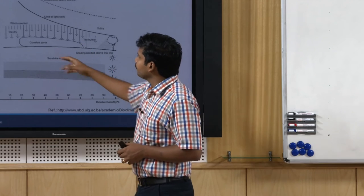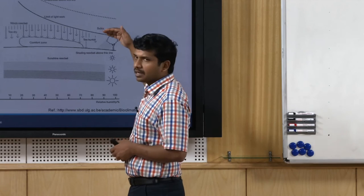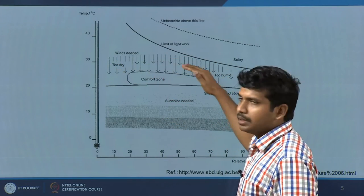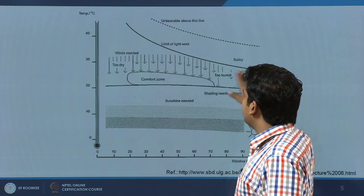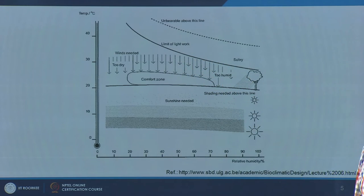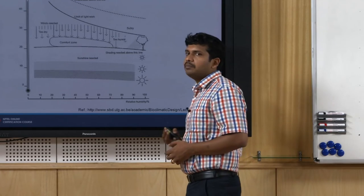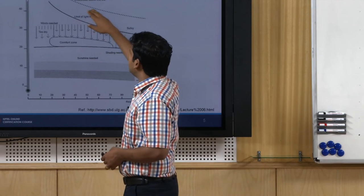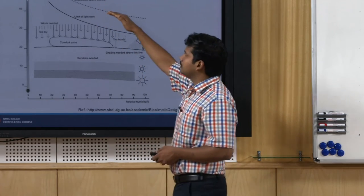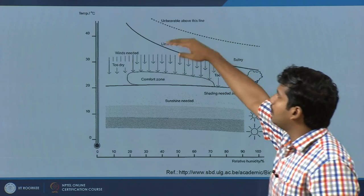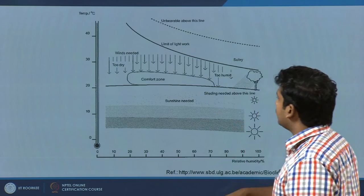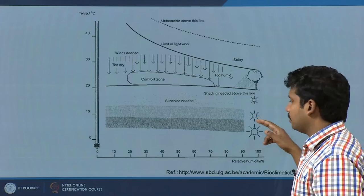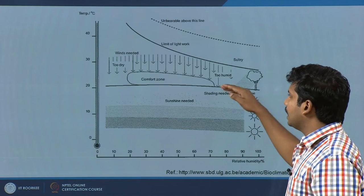For outdoor conditions: beyond the comfort zone you need shading; too dry on one side, too humid on the other; above the zone good air movement is needed. There is a dark line indicating the limit for light sedentary work — beyond this you risk heat stroke. A dotted line marks unbearable conditions where health impacts occur. On the colder side, below a certain line you need mild sun and increasing radiation as temperatures drop further.